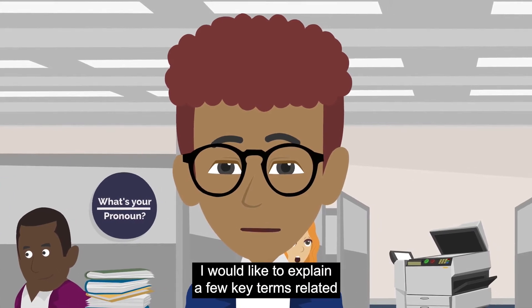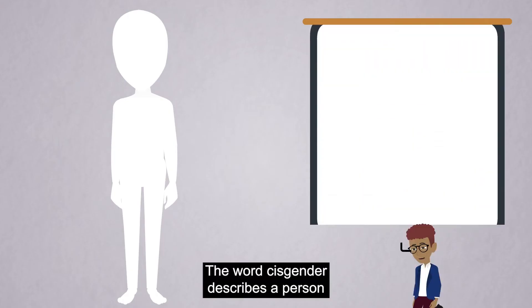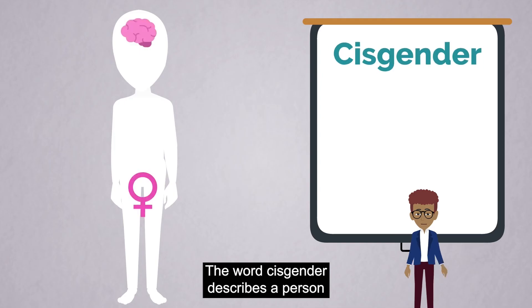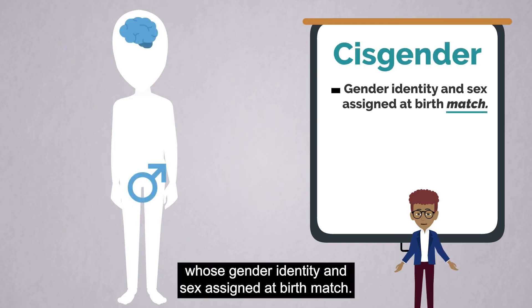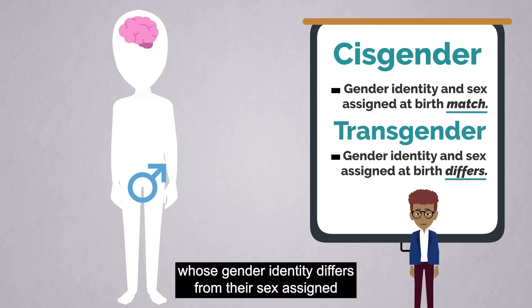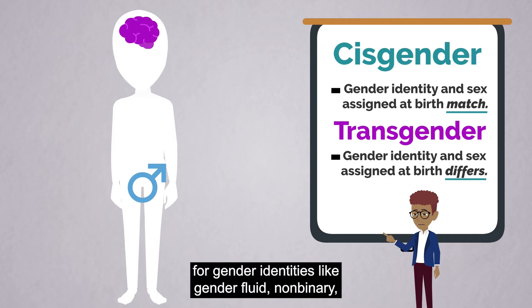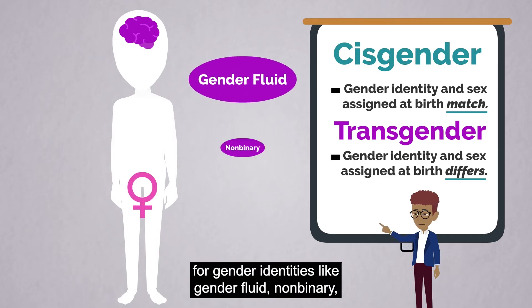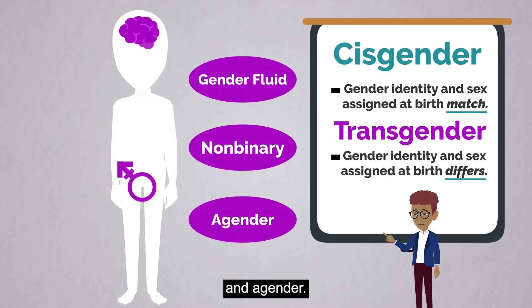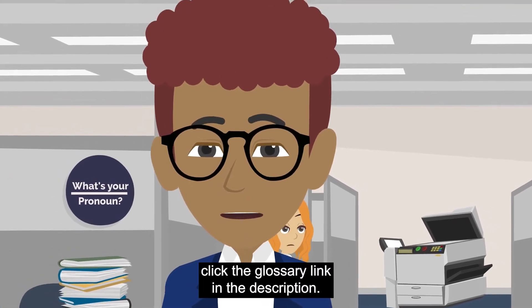I would like to explain a few key terms related to gender identity. The word cisgender describes a person whose gender identity and sex assigned at birth match. The word transgender describes a person whose gender identity differs from their sex assigned at birth. The term transgender is also an umbrella term for gender identities like gender fluid, non-binary, and agender. For more information on these terms, click the glossary link in the description.